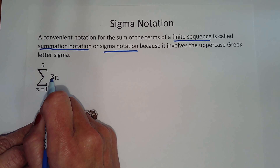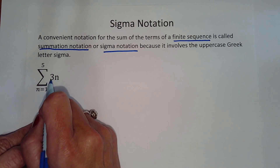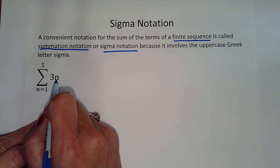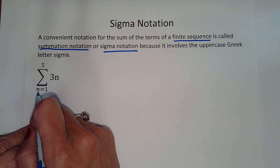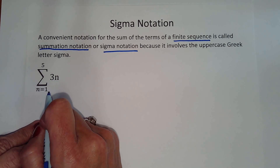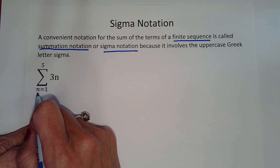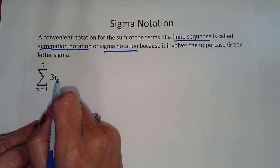If you have k in the formula, like 3k, then it must be k equals 1 below. Our index must match the variable.